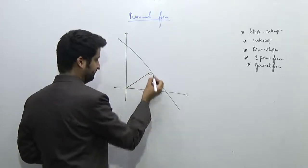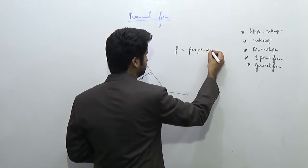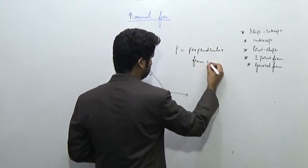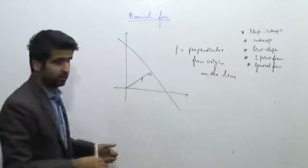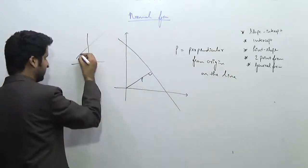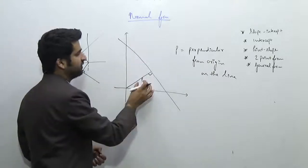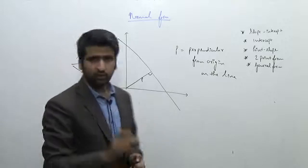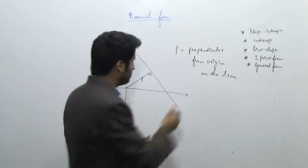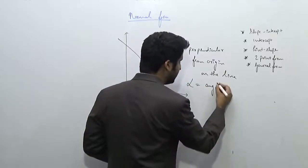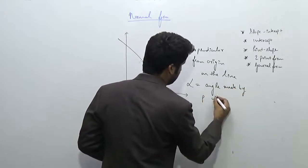This perpendicular from the origin on the line is p, where p is the length of the perpendicular from the origin on the line. If the line was something like this, then the perpendicular will be like this. So in this normal form, I'll always be given the value of p — the perpendicular from the origin on the line is equal to p. The second thing I know is the angle alpha, the angle made by this perpendicular p with the positive x-axis.